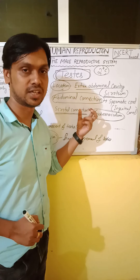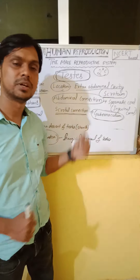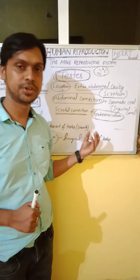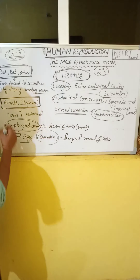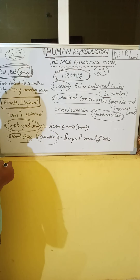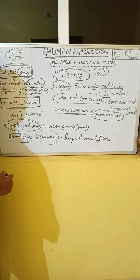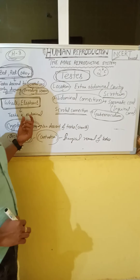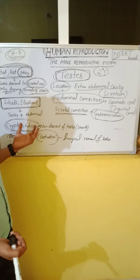The testes are located in the extra-abdominal cavity because spermatogenesis requires a low temperature — about two degrees lower than body temperature. However, in some animals like bats, their testes descend into the scrotal sac only during the breeding season. In whales and elephants, the testes are present inside the abdomen because there is no need for extra cooling.